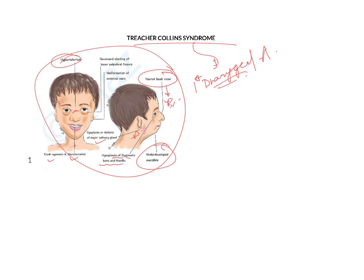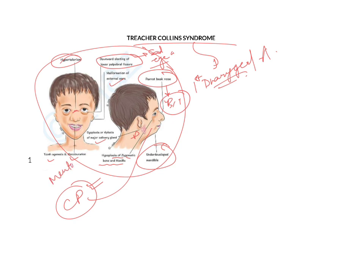We also have an underdeveloped mandible, which is a very common feature. Then we have parrot beak nose, meaning excess bone and tissue on the nose which hampers breathing. There is a downward slanting lower palpebral fissure, giving the patient a sad eye or sad face effect. Malformation of the external ears is also seen.